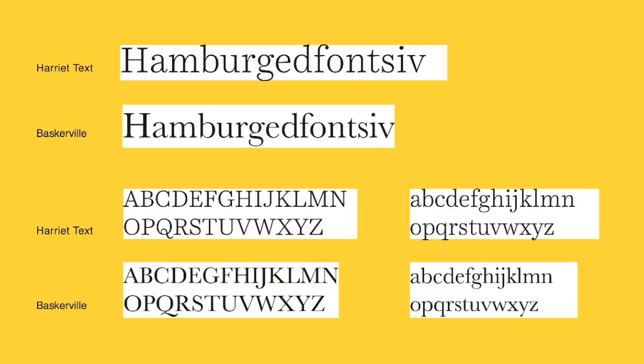We went from old style, now transitional. In a type 1 class you'd be taught Baskerville, moving over from Garamond to Baskerville. So in this case I have as a comparison typeface Harriet, Harriet Text. This was billed as a typeface inspired by Baskerville and some other sources, and I think it'd be a great demonstration to talk about the particular points of a transitional typeface — in this case Baskerville — and how that relates to Harriet.